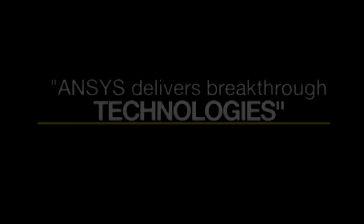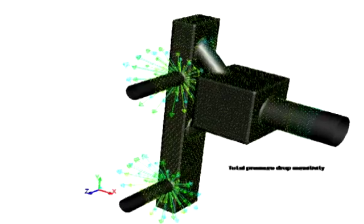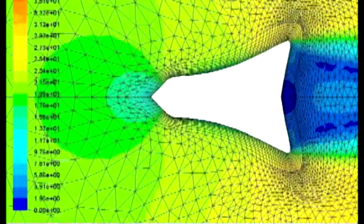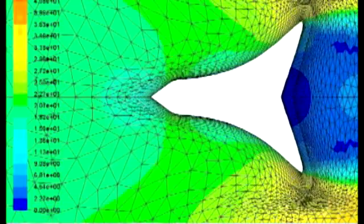The adjoint solver from ANSYS is a unique shape optimization tool that really reduces the amount of simulations you need to run to get to the essence of your engineering problem. Adjoint methods allow us to focus on engineering parameters of interest like lift, drag, and pressure drop in a device.